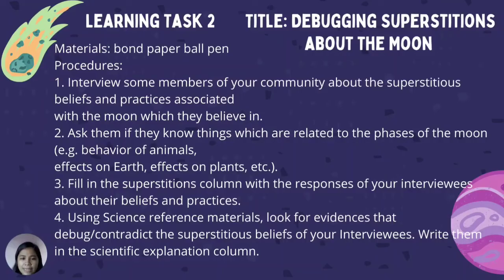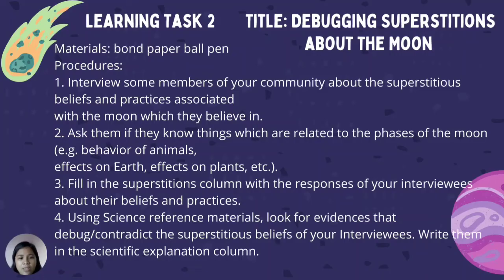For Learning Task Number 2, titled Debunking Superstitions About the Moon, the materials needed are bond paper and ballpen. Procedures: Interview some members of your community about superstitious beliefs and practices associated with the moon. Ask them about things related to the phases of the moon — for example, behavior of animals, effects on the earth, effects on plants, etc. Fill in the superstitious column with the responses of your interviewees. Using science reference materials, look for evidence that debunks or contradicts the superstitious beliefs of your interviewees, then write them in the scientific explanation column.